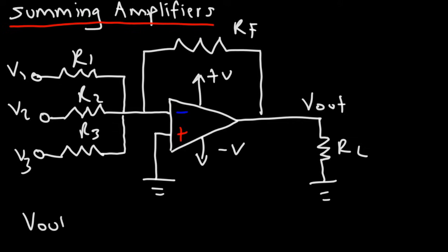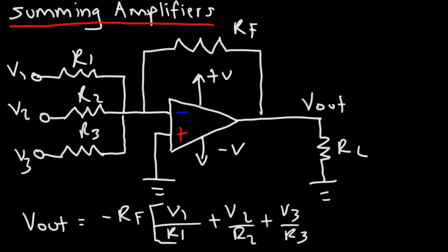The output voltage of this circuit is going to be the feedback resistor, with a negative sign in front, times V1 over R1, plus V2 over R2, plus V3 over R3. So as we can see, the output voltage is proportional to the sum of the input voltages.